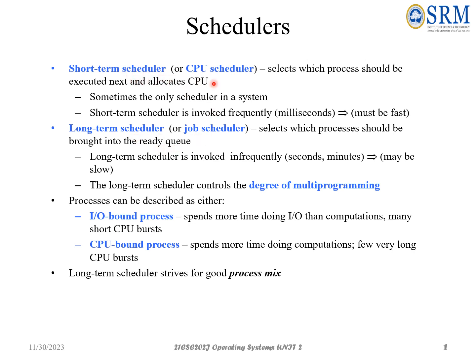Coming to the short-term scheduler, it is actually the CPU scheduler. We have n number of processes in the ready queue, and we need to allocate time for each process in the CPU. If a process is going to move from the ready queue to the running state, then we term it as the short-term scheduler, because we are allocating CPU for a particular process from the ready queue to the running state.